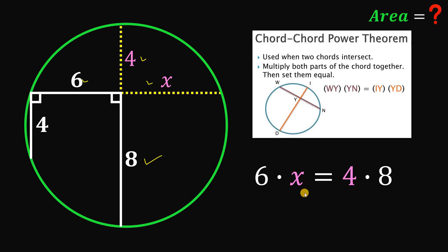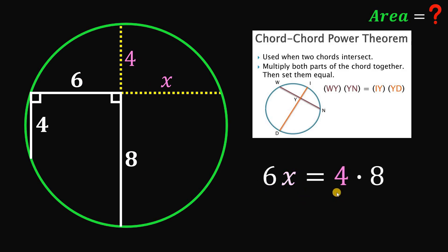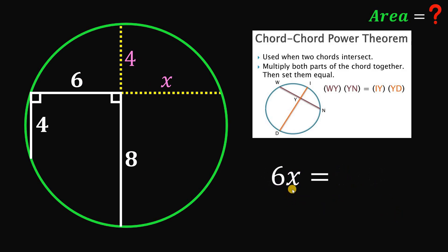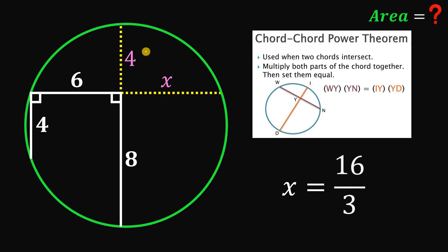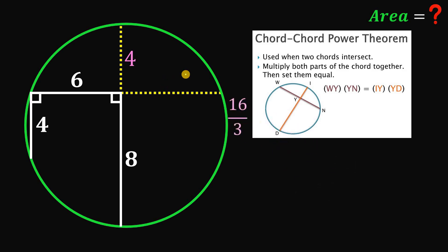So 6x equals 4 times 8, which is 32. Dividing both sides by 6, and simplifying — since 32 is 2 times 16 and 6 is 2 times 3 — we get x equals 16 over 3 units.